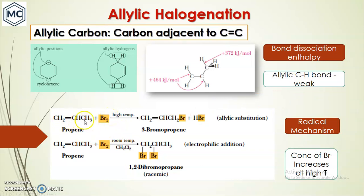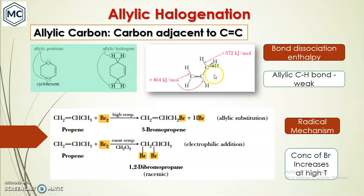You can do allylic halogenation by treating an allylic compound with bromine, but at room temperature there is a possibility of breaking the double bond and adding halogen across it. However at high temperature a radical mechanism occurs and the allylic carbon gets brominated - allylic substitution reaction occurs. At high temperature this bond can be easily broken and you get a high concentration of bromine radical. So you can do allylic halogenation by using bromine at high temperature.